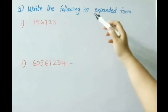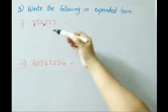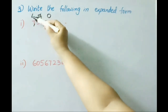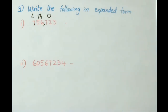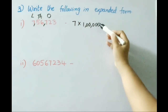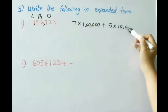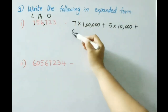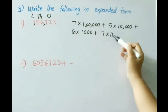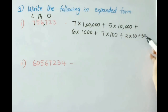See now the third sum: write the following in expanded form. First 3 digits, then 2 and 2 digits separated by commas. Periods: ones period, thousands, and lakhs. Now let us write in expanded form: 7 × 1 lakh + 5 × 10,000 + 6 × 1,000 + 7 × 100 + 2 × 10 + 3 × 1.